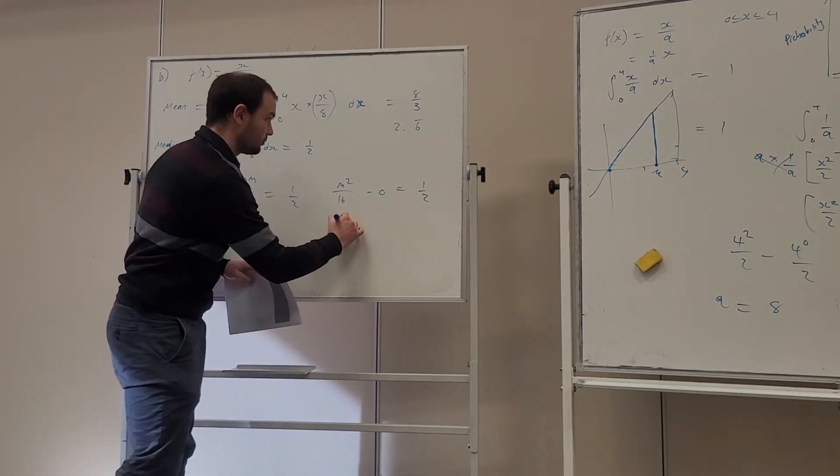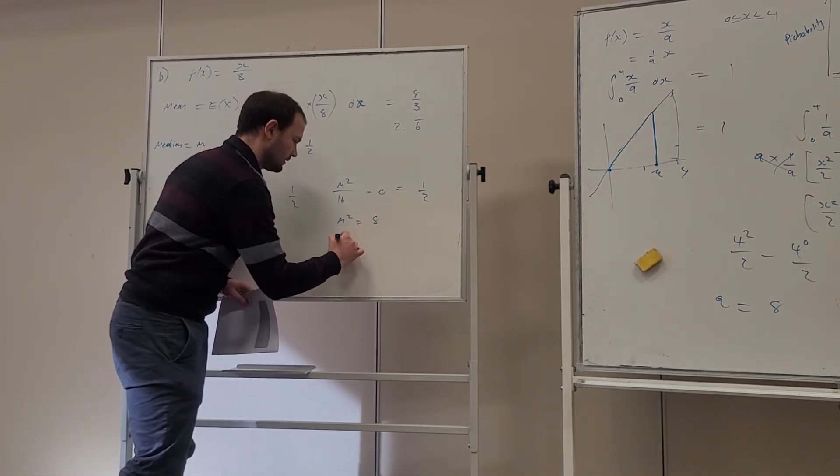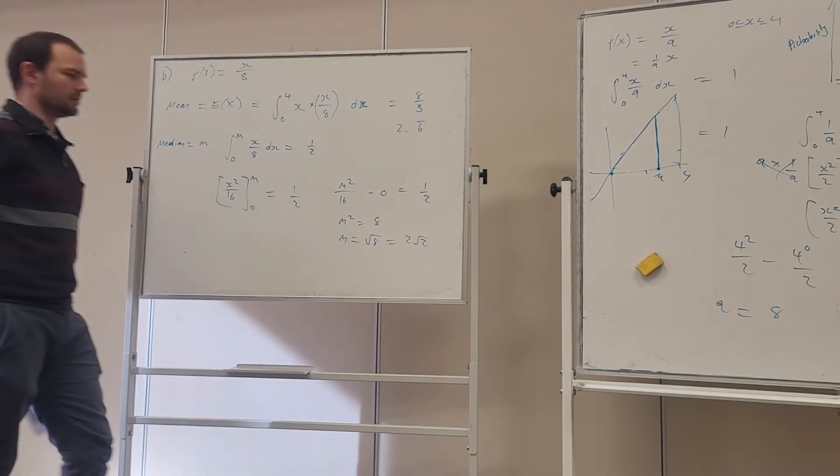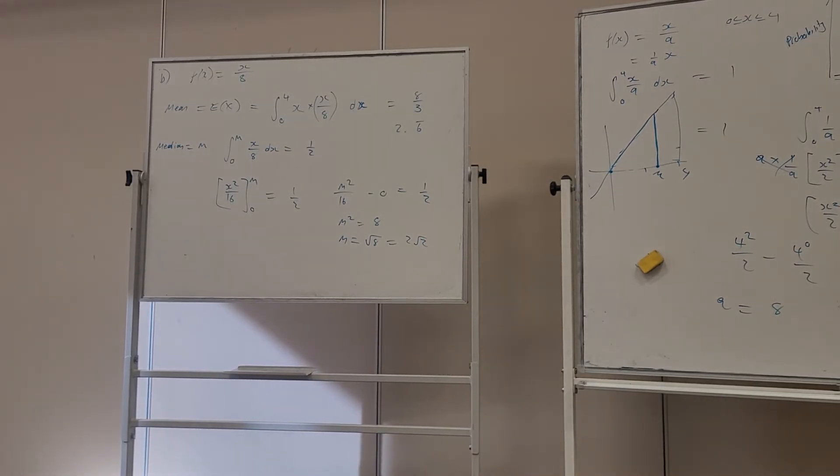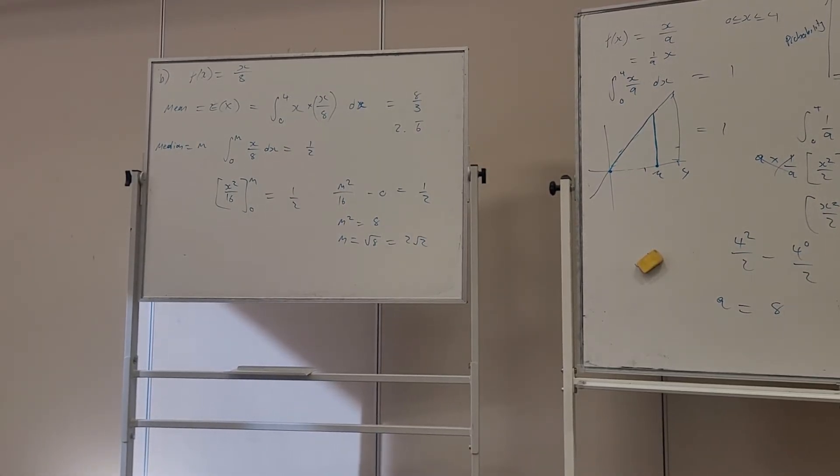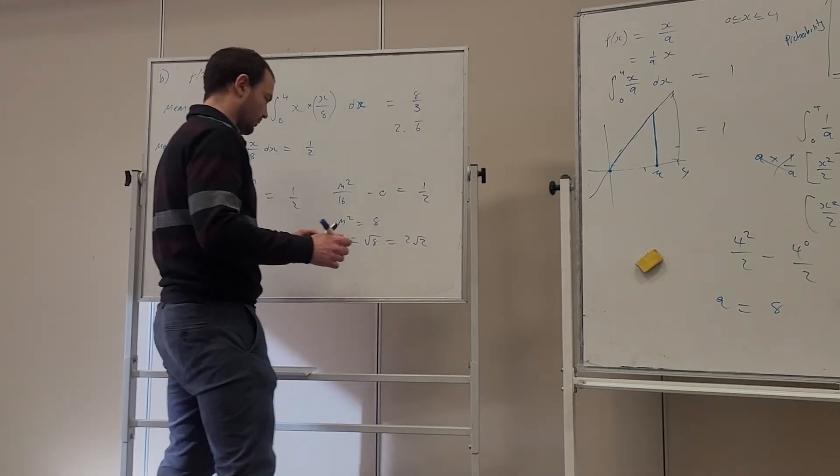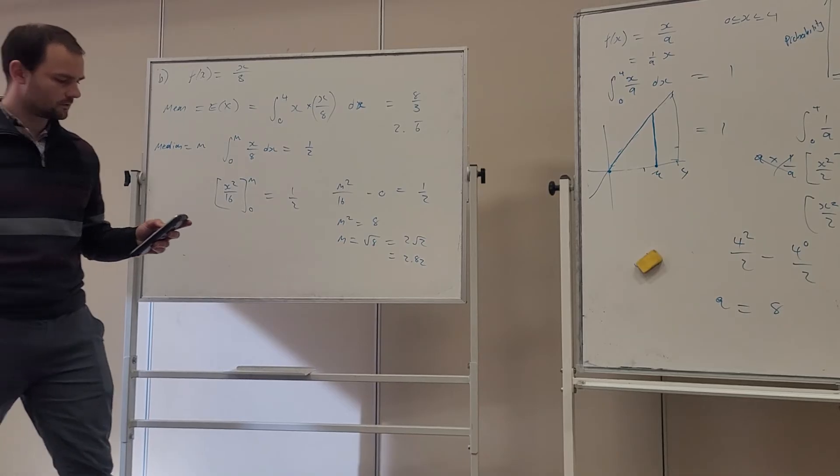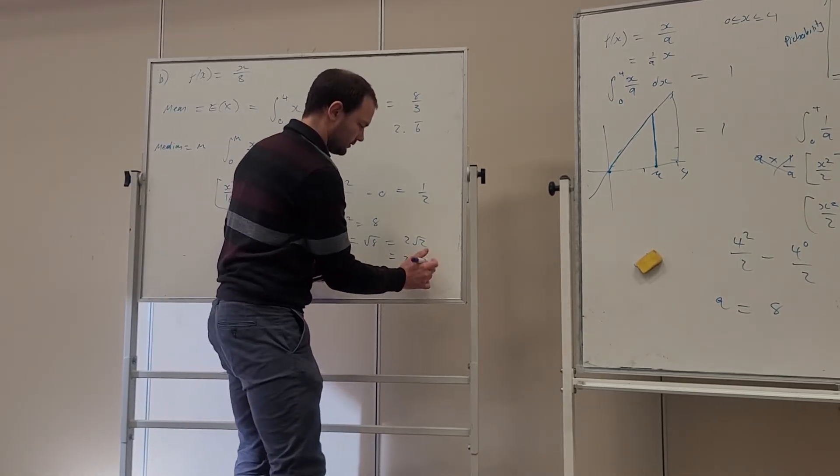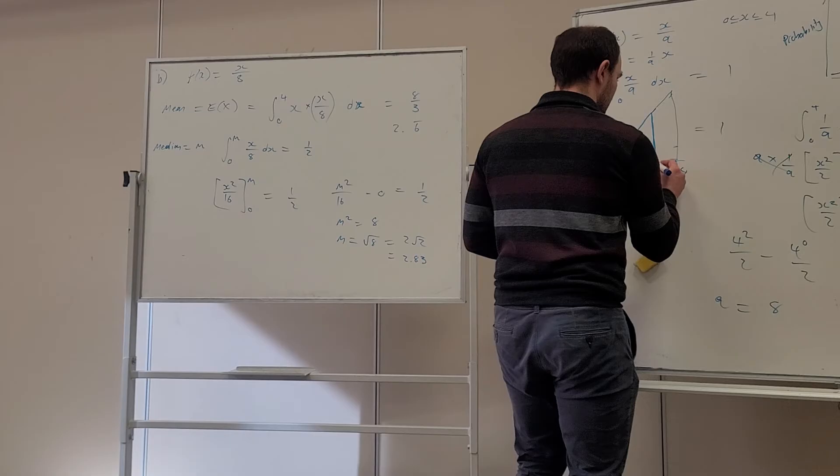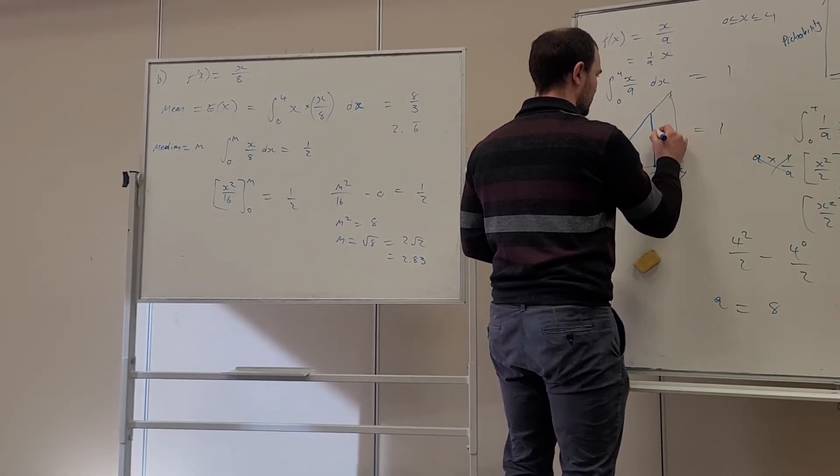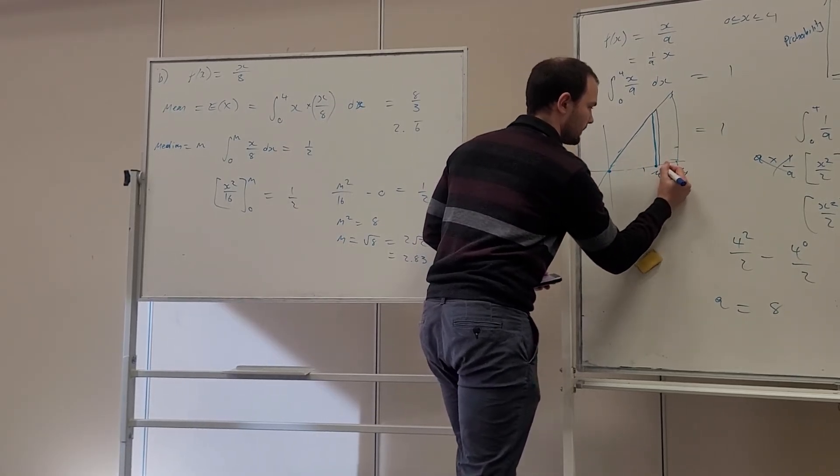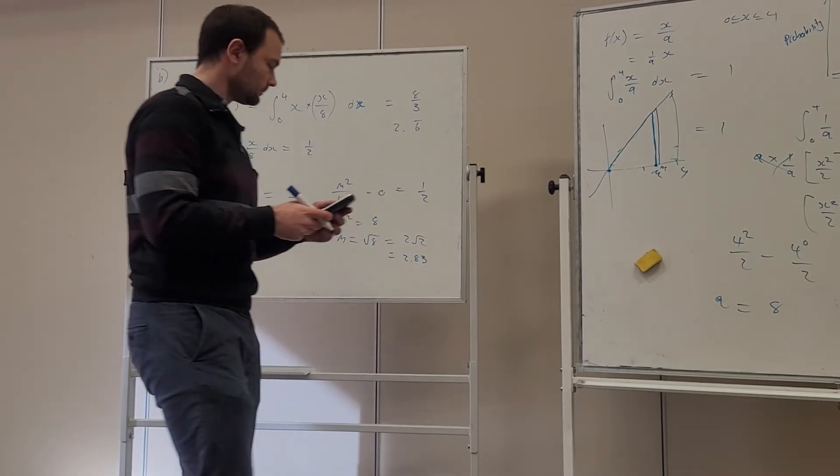Multiply both sides by 16, we'll have m squared is 8, and that gives us m is the square root of 8. If you put it in your gap later, it will be 2 root 2, and then to a few decimal places, what's that? 2.82. 2.83, sorry. So there's a mean, there's the median.